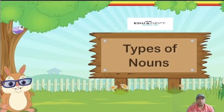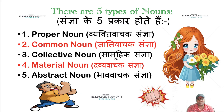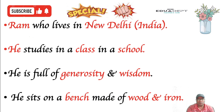So let's talk about types of nouns in English grammar. There are five types of nouns in English grammar. First of all proper noun, second common noun, third collective noun, fourth material noun, and fifth abstract noun. So let's clear all these nouns with some examples.